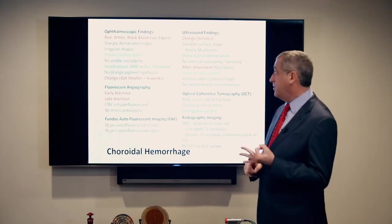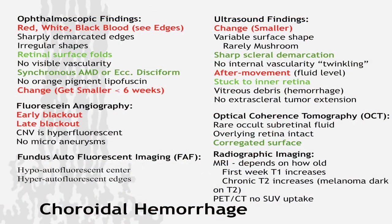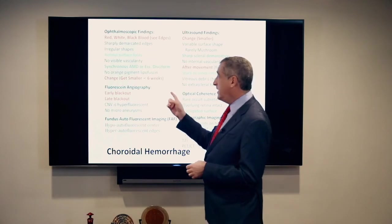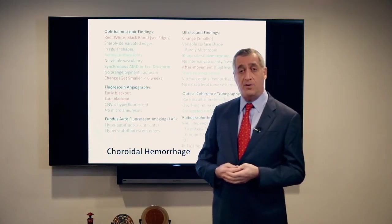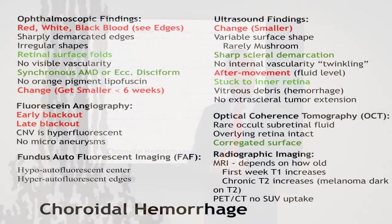Look at the edges — they're very telling. If you see a little blood around the edge, it could mean quite a bit. Look at the surface of the tumor: you'll see folds, sometimes so remarkable they look like corrugated cardboard. Look for synchronous age-related macular degeneration. If you're looking at a tumor in the peripheral retina in an older patient who also has exudative macular degeneration, that should factor into your diagnosis. Also, bleeding changes — just like a bruise on your arm. Observation can be very important in diagnosing a choroidal hemorrhage.